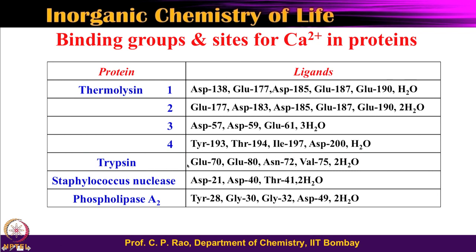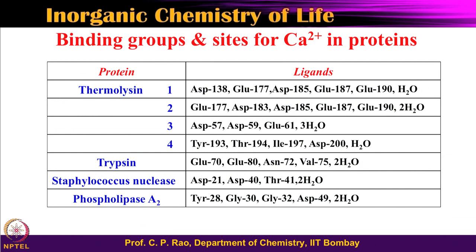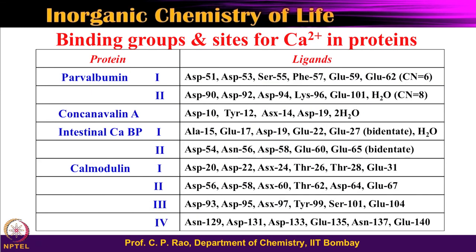For trypsin, you have glutamic, glutamic, asparagine, and so on. For phospholipase, this is the one where you have fewer aspartic or carboxylic residues. Looking at the continuation of the table — parvalbumin has two coupled calcium centers with aspartic, aspartic, glutamic residues. We have seen several calcium 2+ binding proteins: thermolysine, trypsin, staphylococcus nuclease, phospholipase, parvalbumin, quinconavaline.